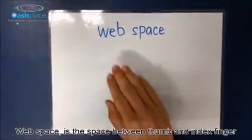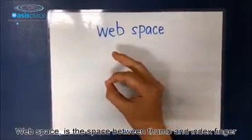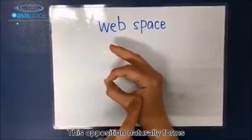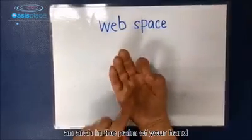Web space is the space between thumb and index finger. Let's imagine forming an O with your thumb and index finger. This opposition naturally forms an arch in the palm of your hand.